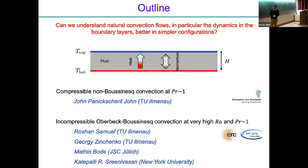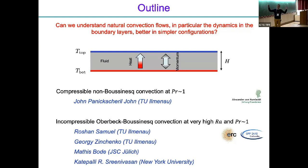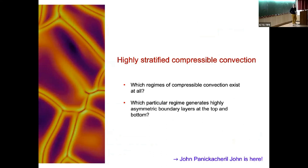That work is together with John Panicale, who is sitting in the audience. The second part is the incompressible Boussinesq case, where we push Rayleigh numbers to very high values. The Prandtl number in both cases is about one. The aspect ratios are large — not confined geometries typical of experiments and past simulations — we are trying to have as large an aspect ratio as possible with periodic boundary conditions. This is joint work with Roshan Samuel, Georgy Zinchenko, Matis Bode, and Katepalli Sreenivasan.